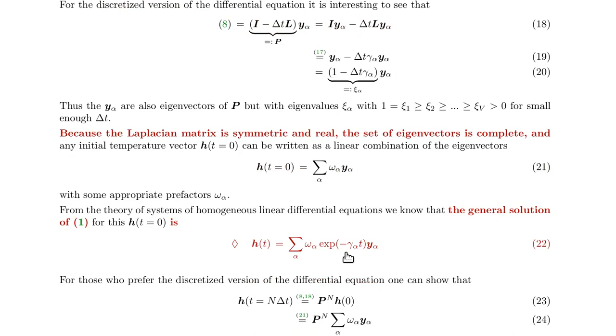So this exponential of minus gamma alpha t y alpha. So that's one of the solutions that we get if you have an eigenvector and eigenvalue. And they simply get weighted with these omega alphas with arbitrary weighting factors. Since it's a linear differential equation, you have the superposition principle. So, since this is a solution, any linear combination of these solutions is also a solution. And that's the general solution of the system.